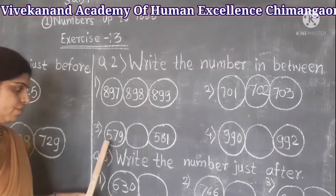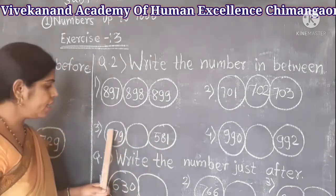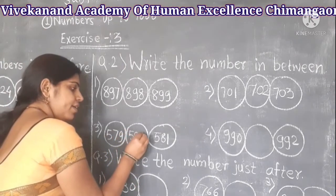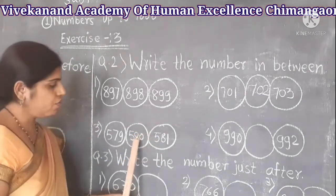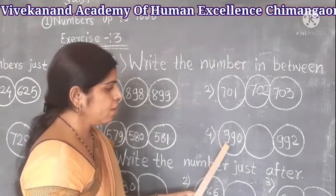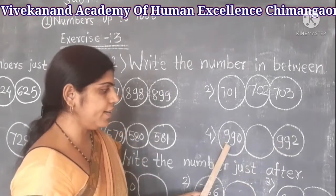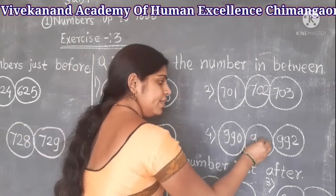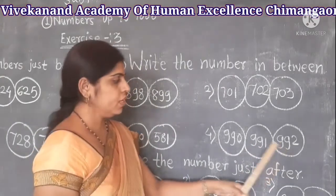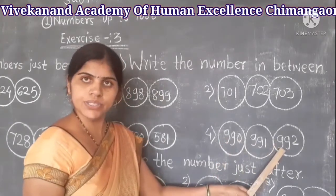Third example: 579 and 581. We know that after 579 comes 580, and after 580 comes 581, so 580 is the between number. Fourth example: 990 and 992 — 990, 991, 992 — so 991 is the between number of 990 and 992.